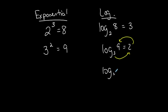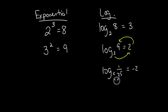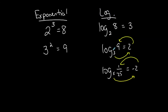Log base 5 of 1/25 is equal to negative 2. If I want to convert this back into exponential form, I could say: the base of the log is 5 — go around the world, raise it to this exponent, and set it equal to this. This went around the world counterclockwise. So the base is 5, raise it to the negative 2, equal to 1/25. The base of the log is the same as the base of the exponential, the exponent is the same, and the log equals the exponent. 5 to the negative 2 is 1/25.